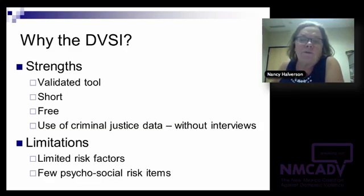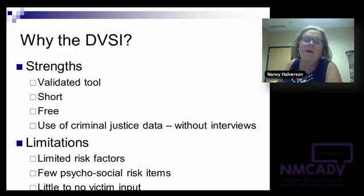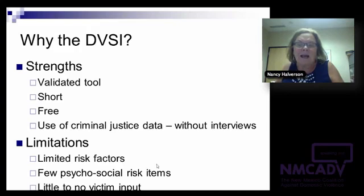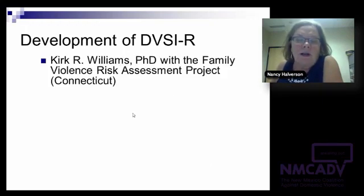To summarize: the DVSI is a validated tool, short, free, and gives us a basic screen on likelihood of recidivism. The DVSIR is in production — Kirk Williams, who developed the DVSI, is working on it in Connecticut. They found it eliminated some of the unknowns when trying to score the DVSI initially due to limited data access. It's 11 items with some overlap with the DVSI, also allowing for a summary risk rating. Initial studies show accuracy in the high 60s to low 70s — right around where our DVSI studies were.